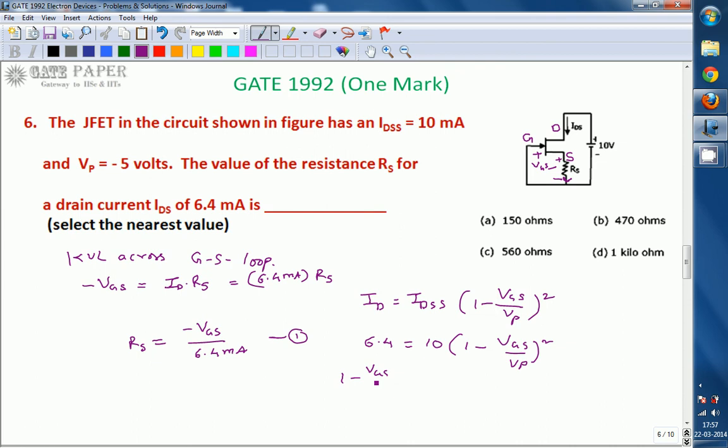From this, 1 minus VGS by VP equals square root of 6.4 divided by 10. If you take the square root, it will become 0.8. 0.64 divided by 10 is 0.064, square root is 0.8. From this, you can write VGS by VP equals 0.2.